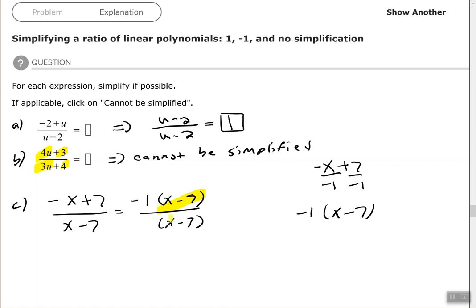That would allow me to simplify or cancel those binomials and I would be left with negative 1. So if you have the exact same terms, but the signs are the exact opposite, then when you divide those by each other, you would end up with negative 1.